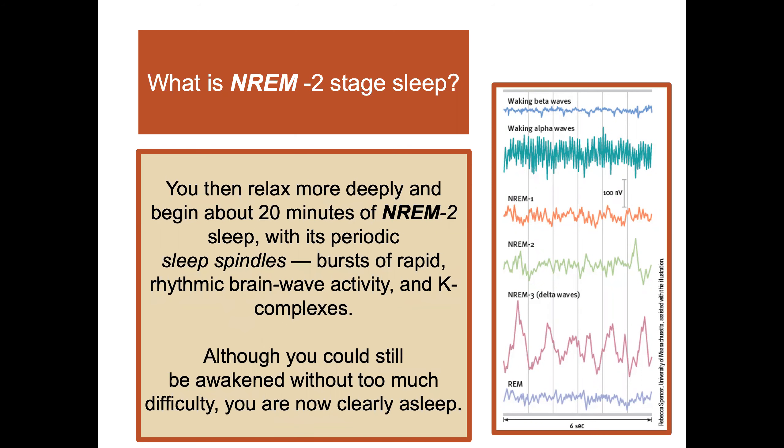NREM2 stage sleep: you relax more deeply and begin about 20 minutes of NREM2 sleep, characterized by periodic sleep spindles — bursts of rapid rhythmic brain wave activity — and K-complexes. Although you could still be awakened without too much difficulty, you are now clearly asleep.